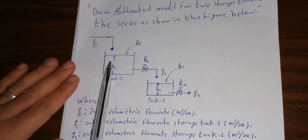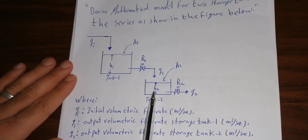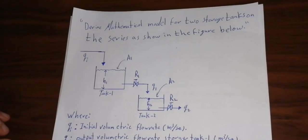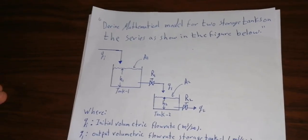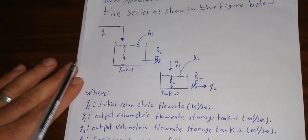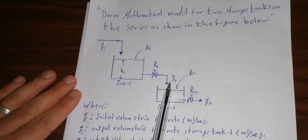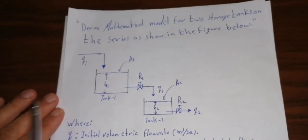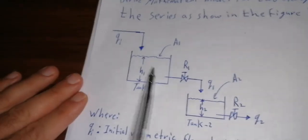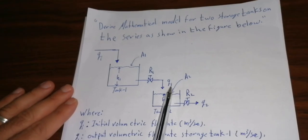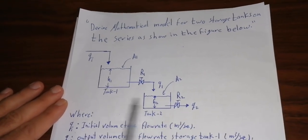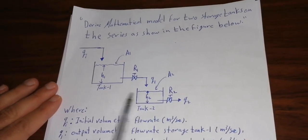The system in series consists of a first storage tank and a second storage tank. We must define all the process parameters. QI is the initial volumetric flow rate; Q1 is the output volumetric flow rate of storage tank 1; A1 is the cross-sectional area of storage tank 1; H1 is the height of storage tank 1; R1 is the valve resistance of storage tank 1. For storage tank 2, Q1 (output of tank 1) becomes the input; Q2 is the output of storage tank 2; R2 is the valve resistance; A2 is the cross-sectional area; and H2 is the height of storage tank 2.